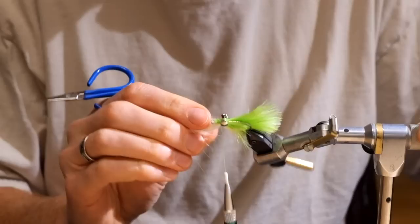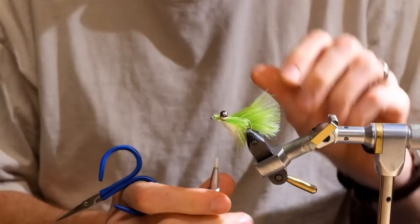Nice soft loop right in front of the eyes again. And then three or four firm wraps to lock it in. Trim that nice and close.